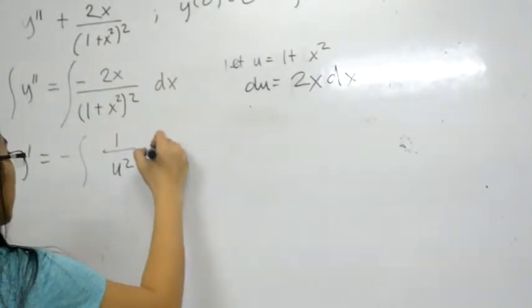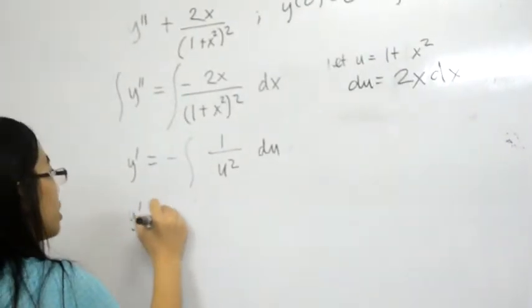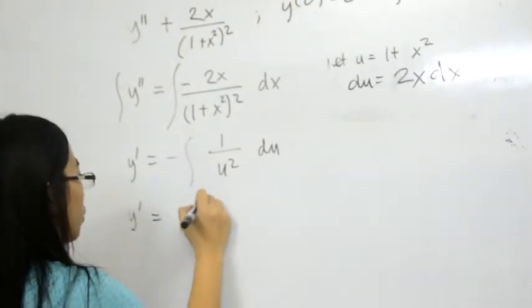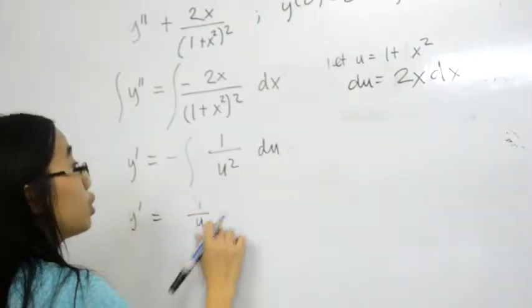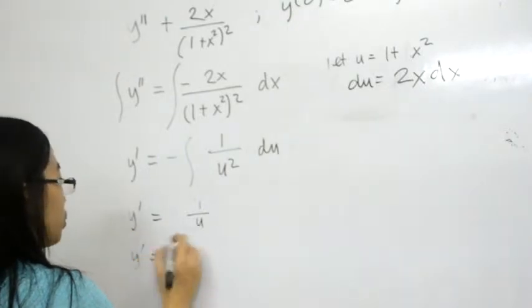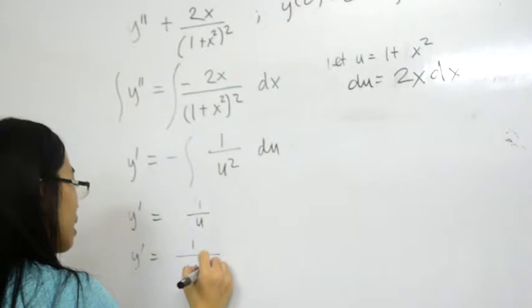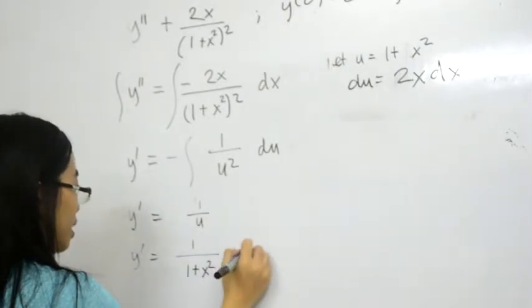Where is the du? y' is equal to 1 over u. So u is equal to 1 plus x squared. y' is equal to -1 over (1+x²) plus C.